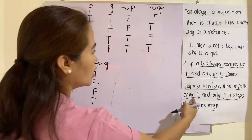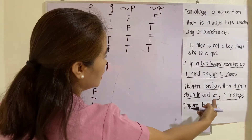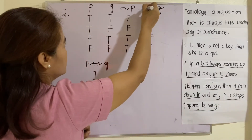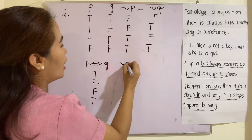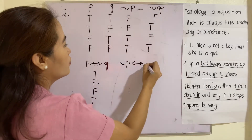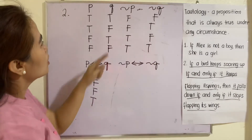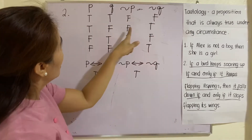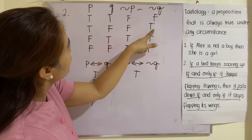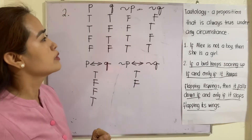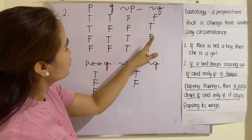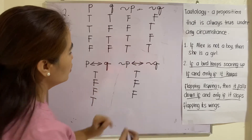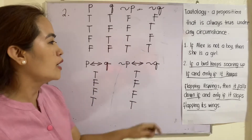The next column: it falls down if and only if it stops flapping its wings, so not P if and only if not Q. F if and only if F is true; F if and only if T is false, referring to the truth table; T if and only if F is false; and T if and only if T is true.